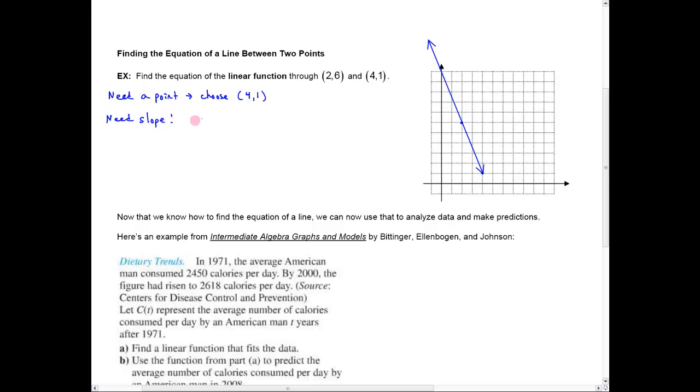I need the slope. The slope is just going to be the difference of the y's. Let's take this y minus this one. So, my slope is going to be 1 minus 6 over the difference of my x's, 4 minus 2. That's going to be negative 5 over 2. And then all I need to do is plug that into the point-slope form of the line.